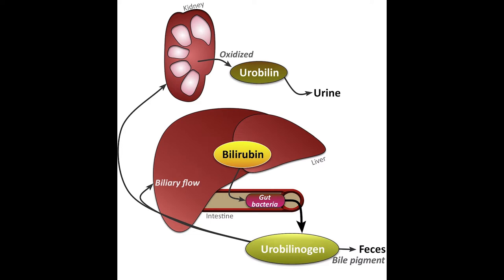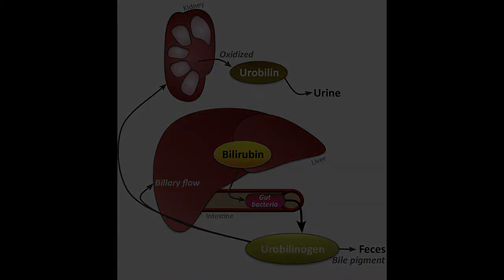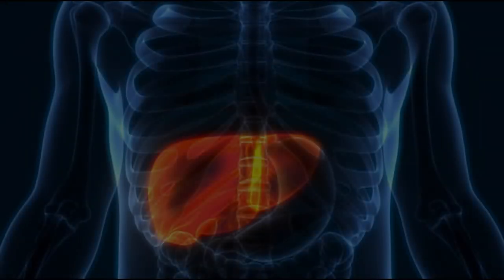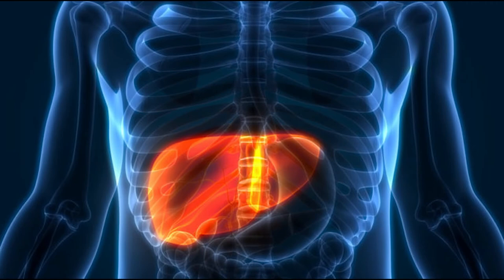About 20 percent of that urobilin is recycled by the body back into the bloodstream, and it travels to the liver and the kidneys. Around 90 percent goes to the liver and about 10 percent goes to the kidneys.